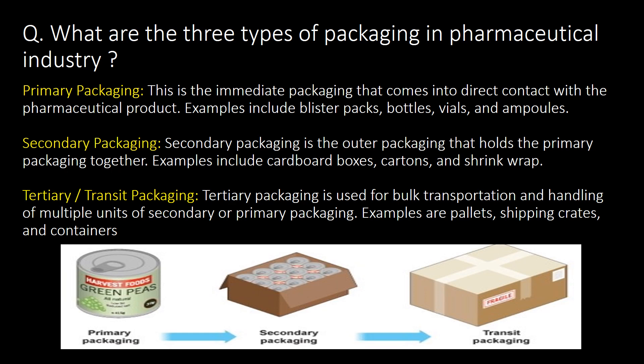Second type: secondary packaging — the outer packaging that holds the primary packaging together. Examples include cardboard boxes, cartons, and shrink wrap. Third type is tertiary or transit packaging — used for bulk transportation and handling of multiple units of secondary or primary packaging. Examples are pallets, shipping crates, and containers.